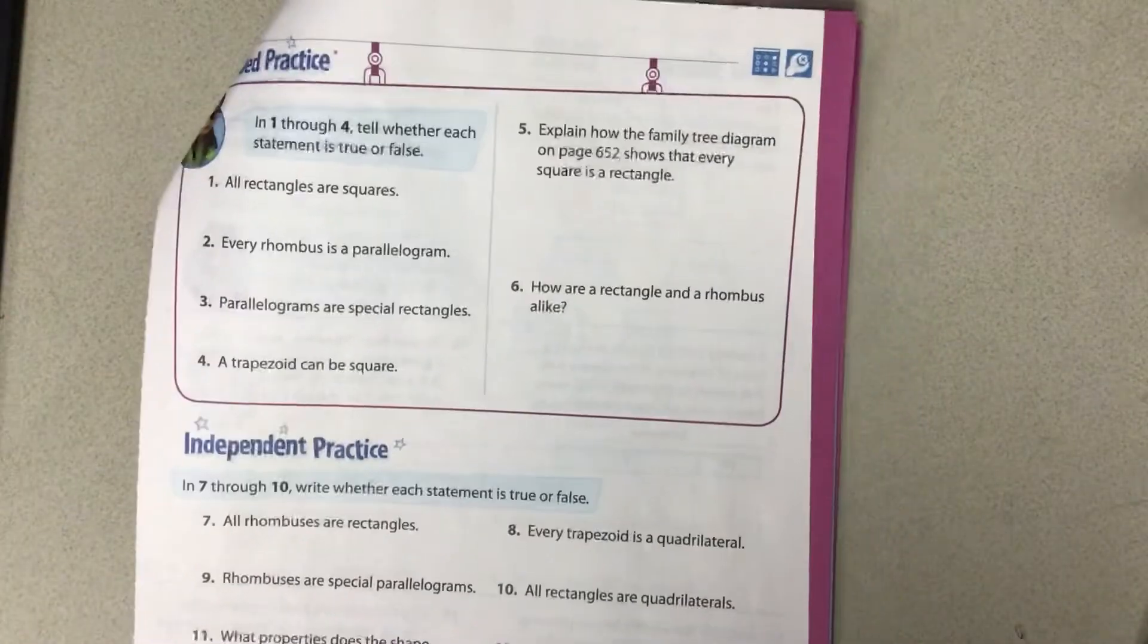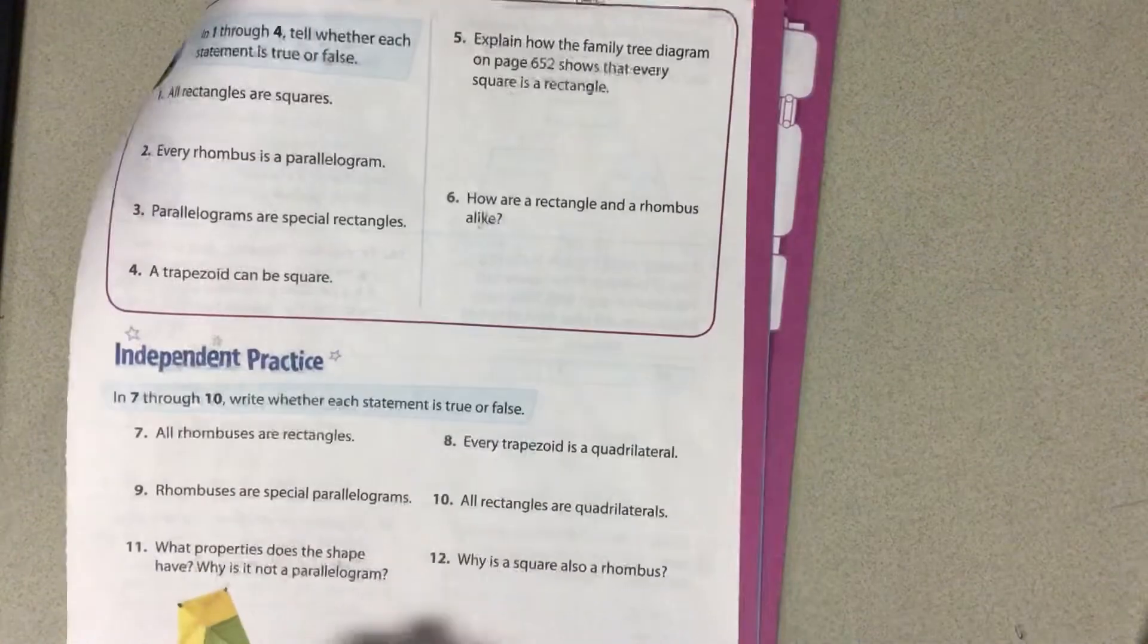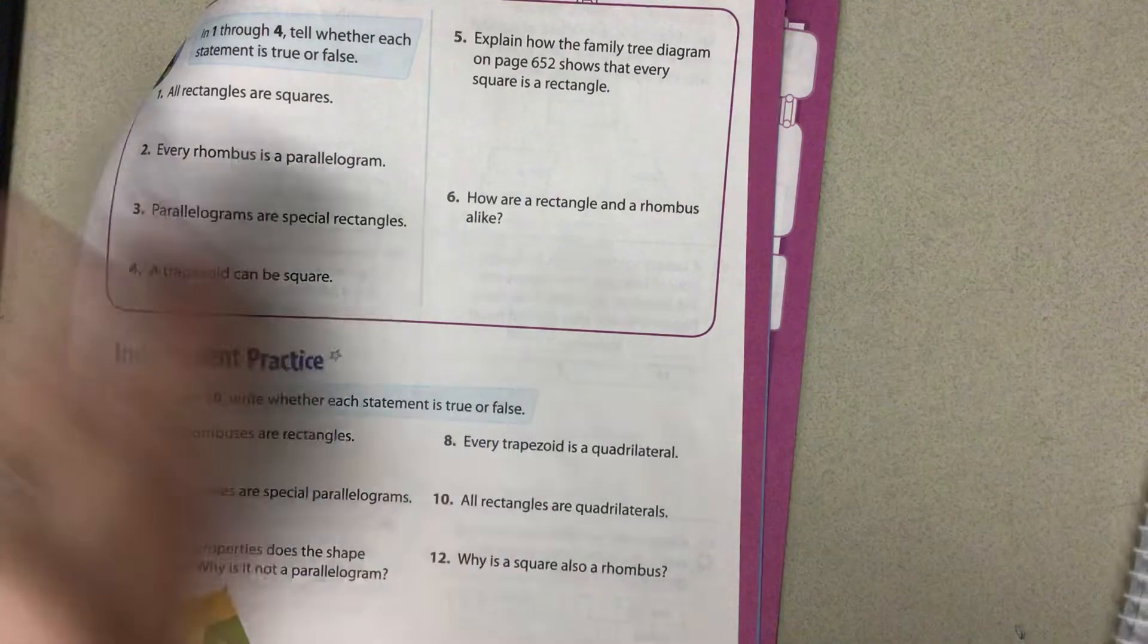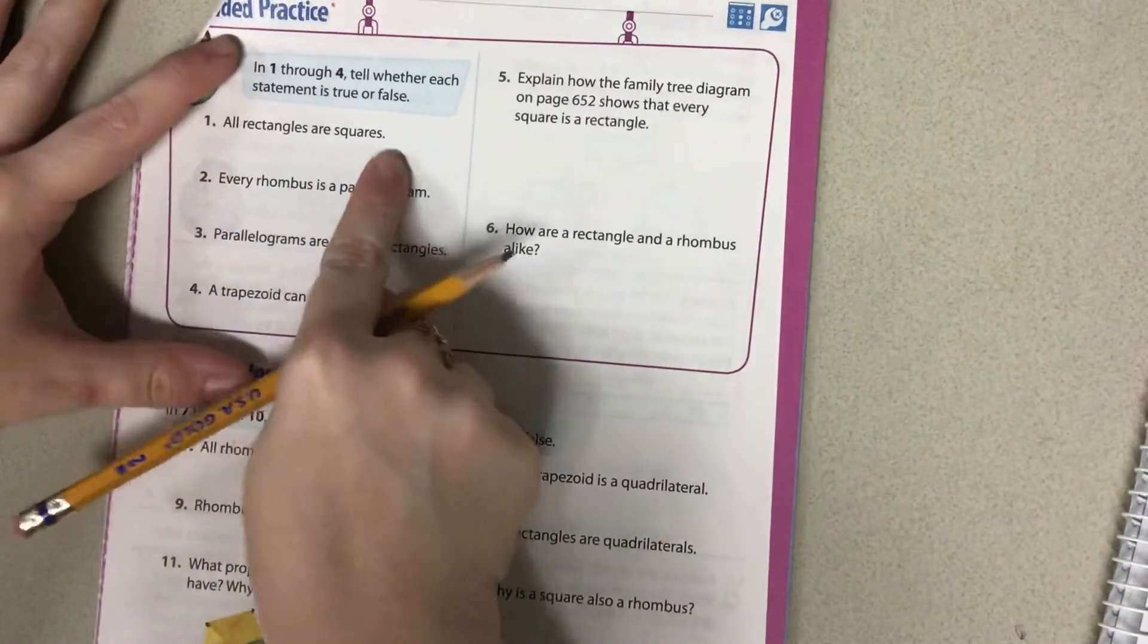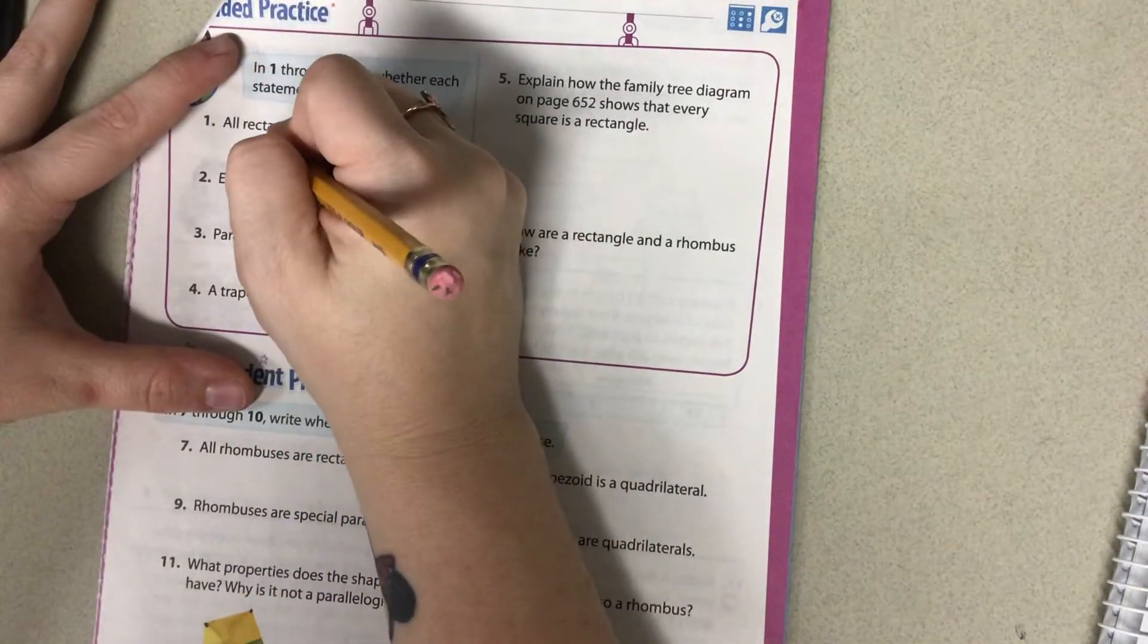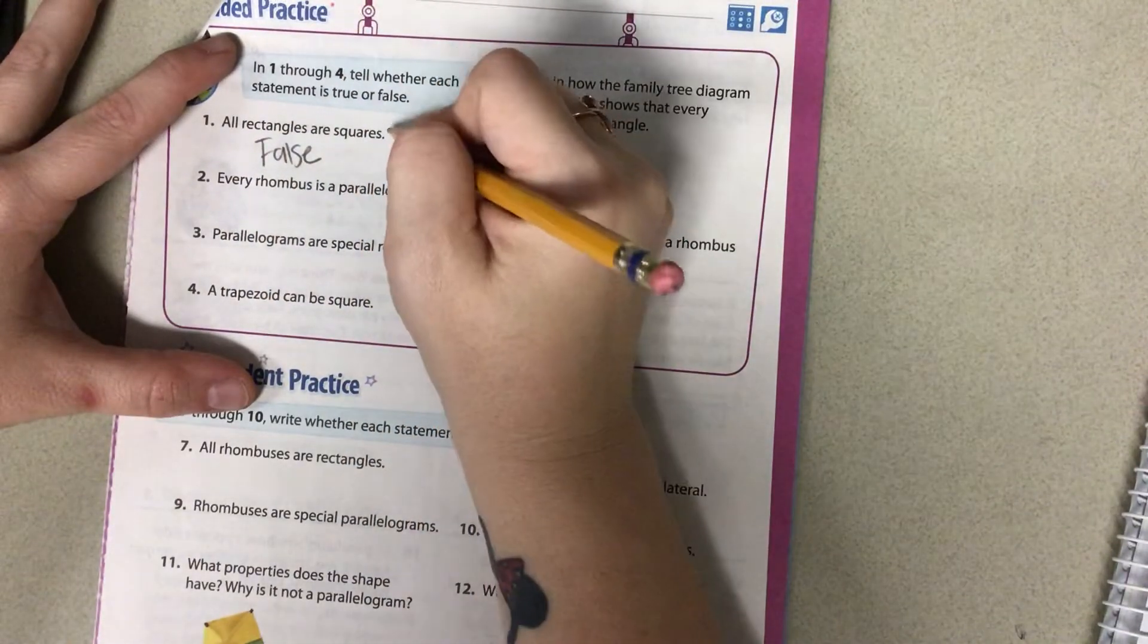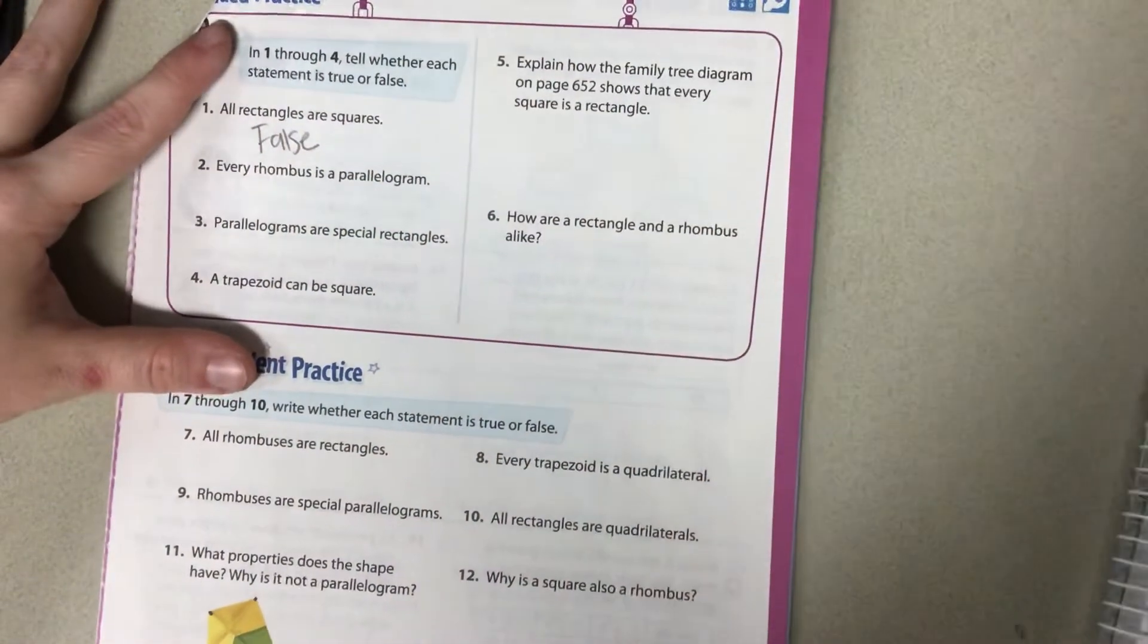So we're going to talk about true and false statements and what makes them true or false. So are all rectangles squares? This is all rectangles are squares. That is false. Because squares have to have equal sides. Rectangles do not have equal sides.